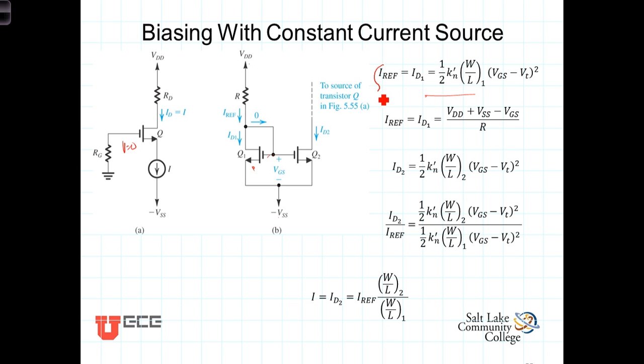These two equations then establish the current I reference. Again, since no current goes into the gate, I reference is just equal to I_D1. With both of the gates tied together and the sources tied together here, V_GS on Q2 is the same as V_GS on Q1.